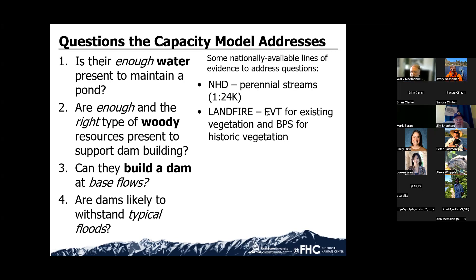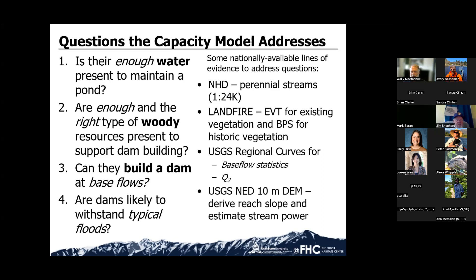We use both what we refer to as EVT — existing vegetation type — and BPS, which is biophysical setting, an estimation of what was there historically. So we can derive our outputs as historic estimations and current estimations. We use USGS regional regression equations for both base flow and Q2 to get at whether a dam can be built or can it persist. For slope measurements, we use NHD diameter data for both slope and stream power estimations.